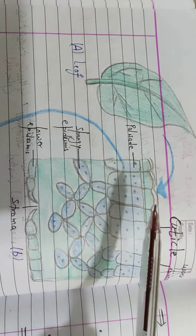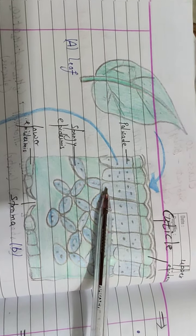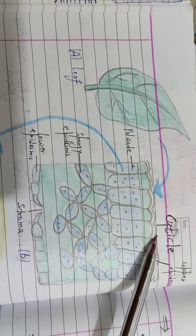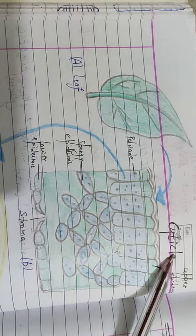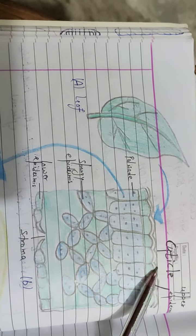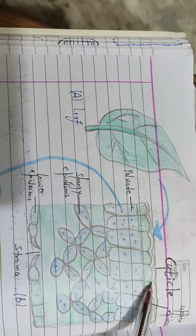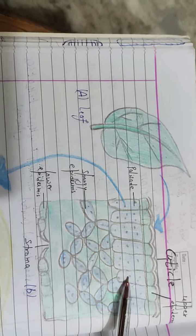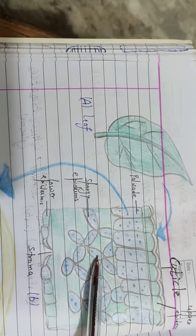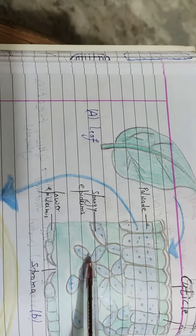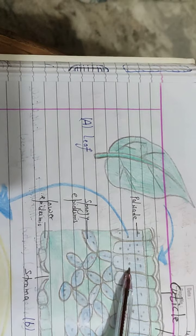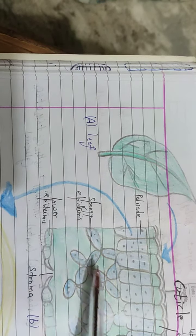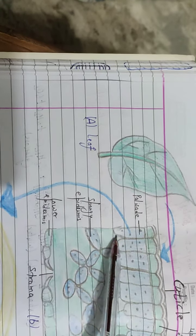Here you can see a green leaf. If we take a transverse section, first is the cuticle. Cuticle is the upper layer which provides protection to leaves. Below that is the epidermis, and just below upper epidermis, palisade and spongy cells are present. In palisade and spongy cells, chloroplasts are present. These spots represent chloroplast.